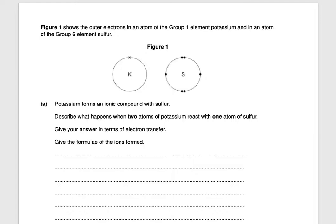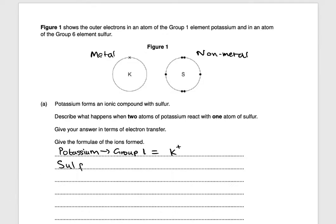We have potassium, which is a metal, reacting with sulfur, which is a non-metal — that's why it's forming an ionic bond. Potassium is in group 1, so it's going to have a positive charge: K⁺. Sulfur is in group 6 and has 6 electrons in its outer shell; it needs 2 electrons to have a full outer shell, so sulfur is going to have a 2-negative charge because it needs to gain 2 electrons to complete its outer energy level.